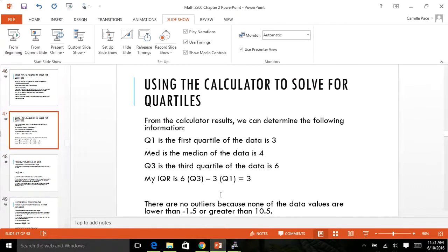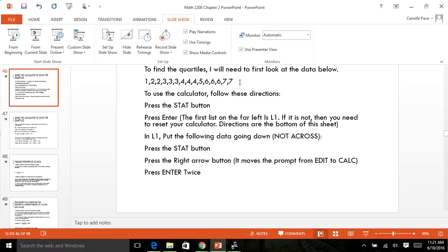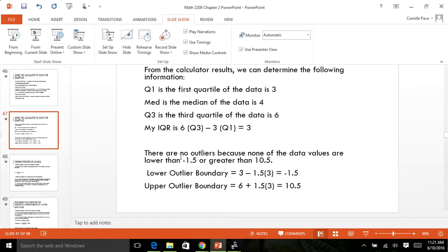Here it is, it's my upper outlier boundary, because six is my Q3 plus 1.5 times three, I get 10.5. If I go back to my original data, I don't have anything above seven. So based on that, there are no outliers for this group. That's how you determine if you have outliers.